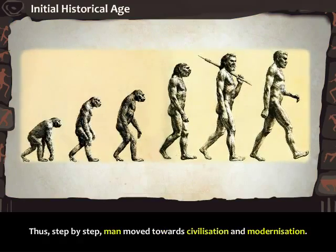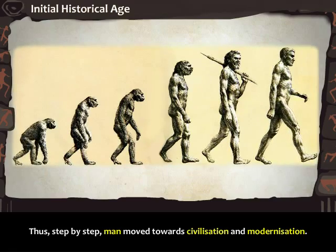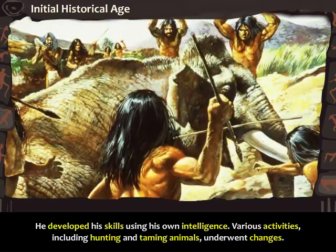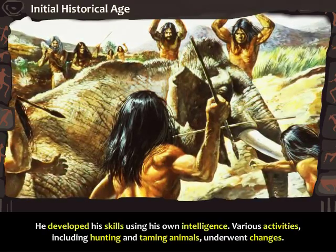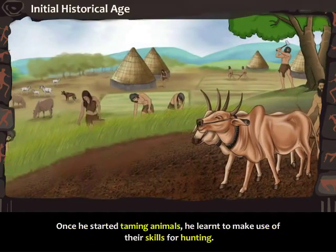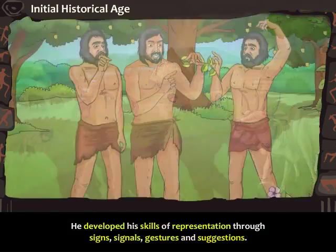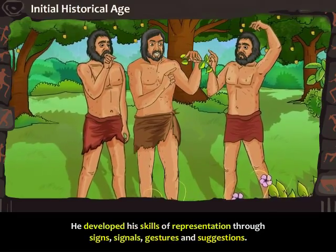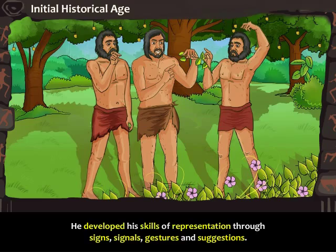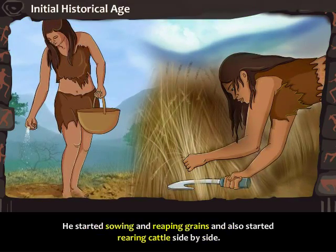Thus, step by step, man moved towards civilization and modernization. He developed his skills using his own intelligence. Various activities including hunting and taming animals underwent changes. Once he started taming animals, he learned to make use of their skills for hunting. He developed his skills of representation through signs, signals, gestures and suggestions. He started sowing and reaping grains and also started rearing cattle side by side.